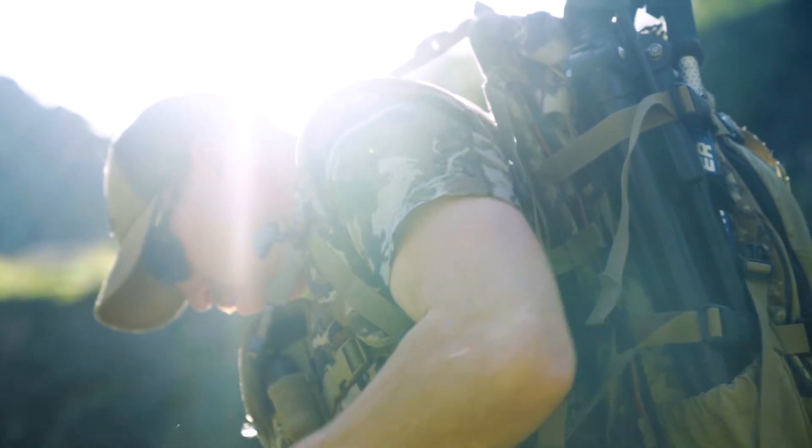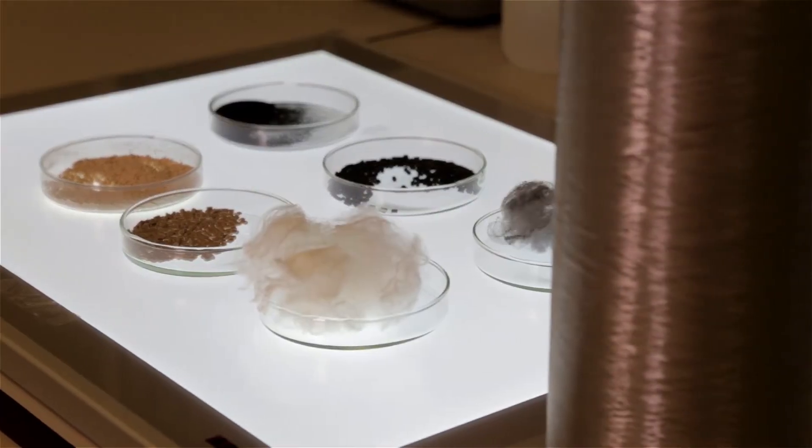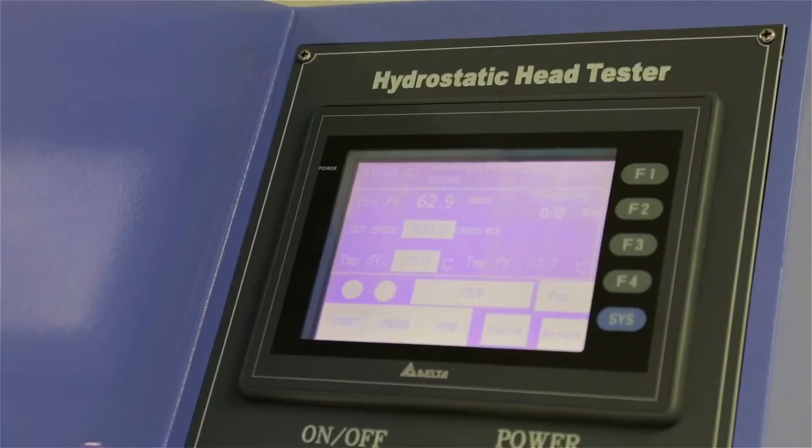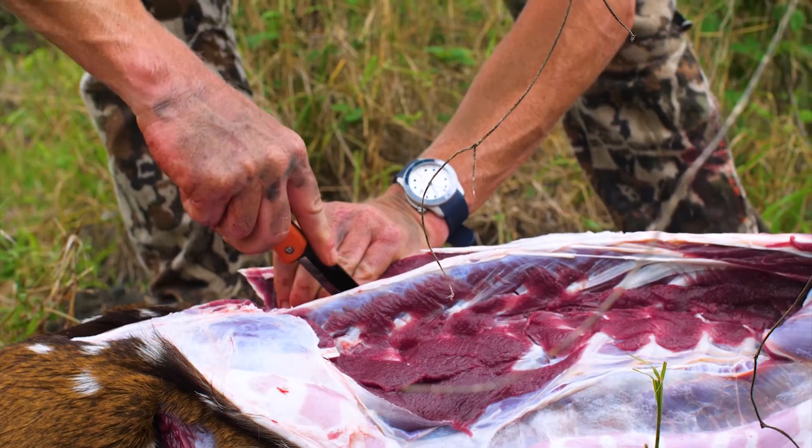So now you know why we at First Light choose 37.5 technology over every other fabric on the market. It is simply the best performing technology for hunting apparel, hands down.